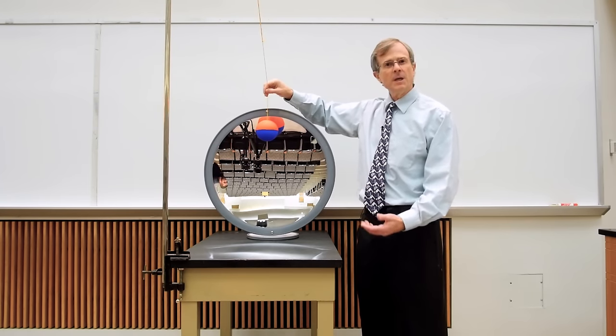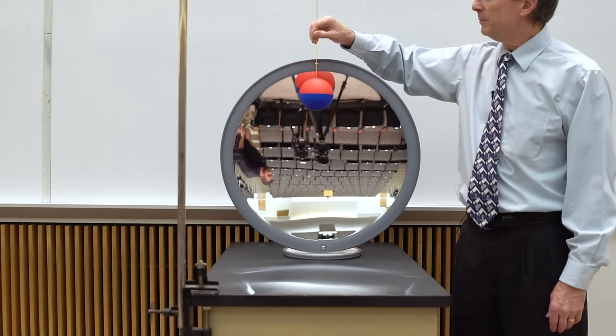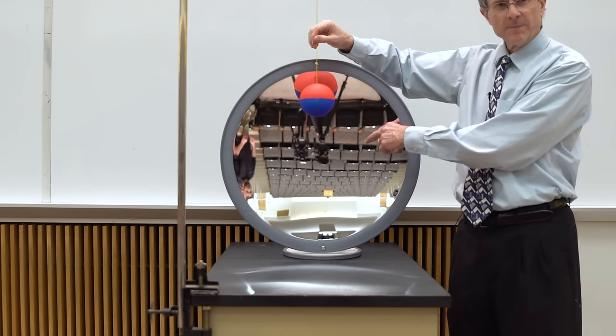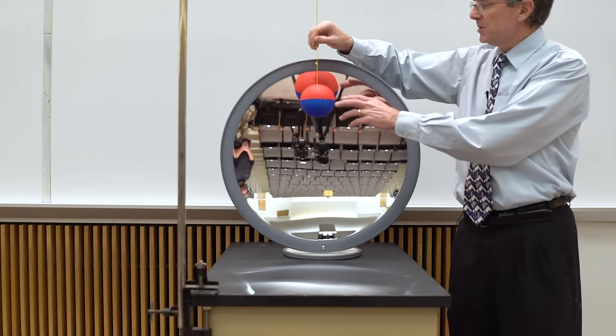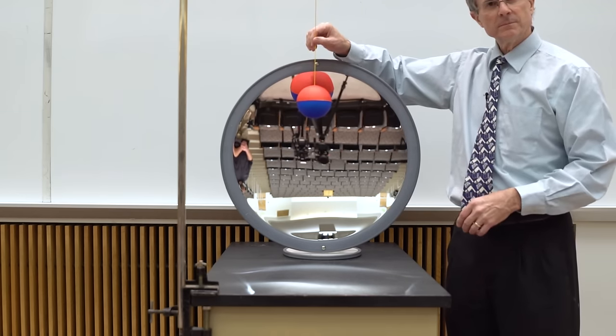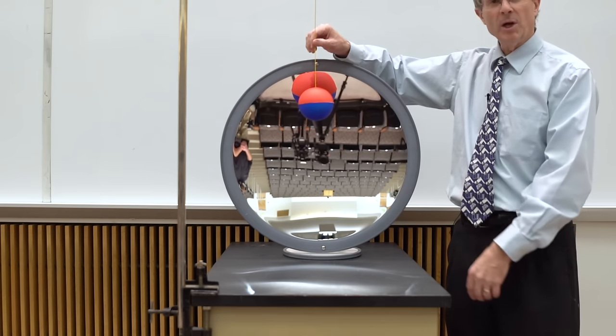When the ball, which is the object, is close to the mirror, the image formed in the mirror is upright. So you'll see a ball in the mirror with the red side up, the same as the ball is in reality.